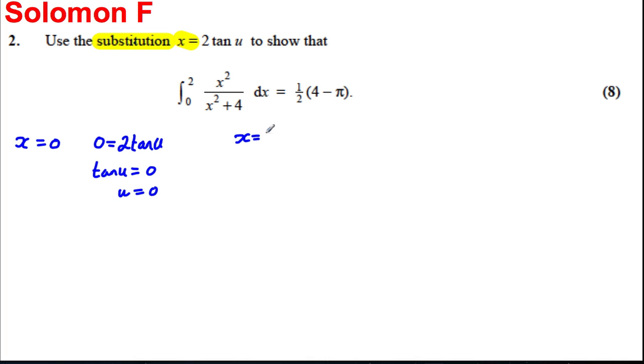If you now let x be two, you're solving two is equal to 2tan(u), which is the same thing as tan(u) is one. So u is the inverse tan of one, which is π by four. Make sure your calculator is in radians, otherwise this won't work.